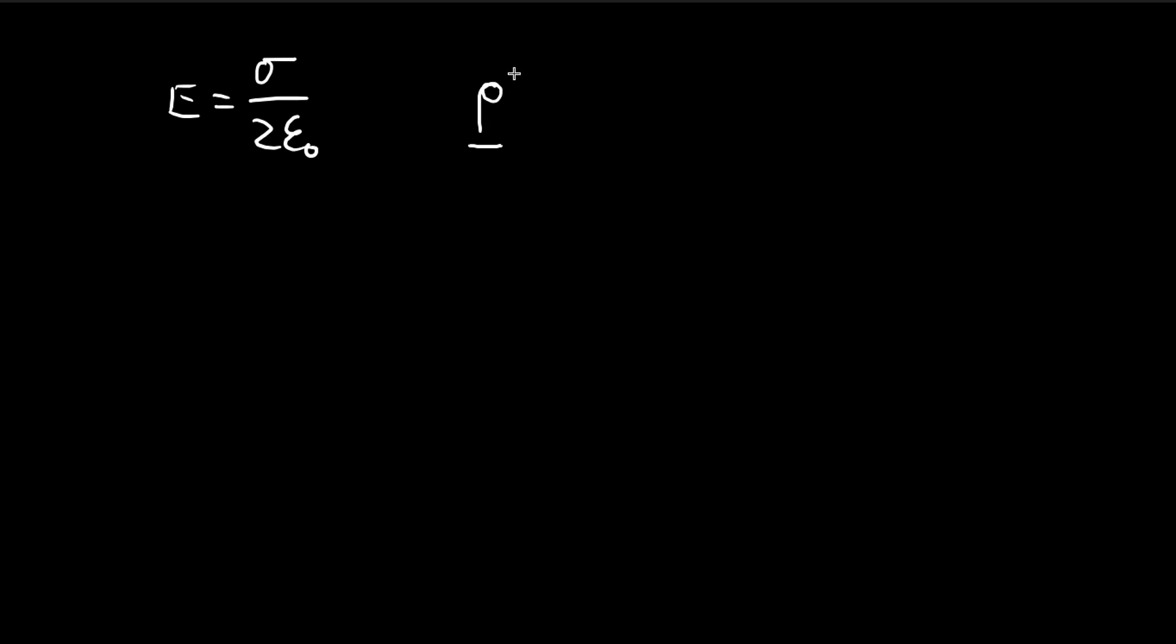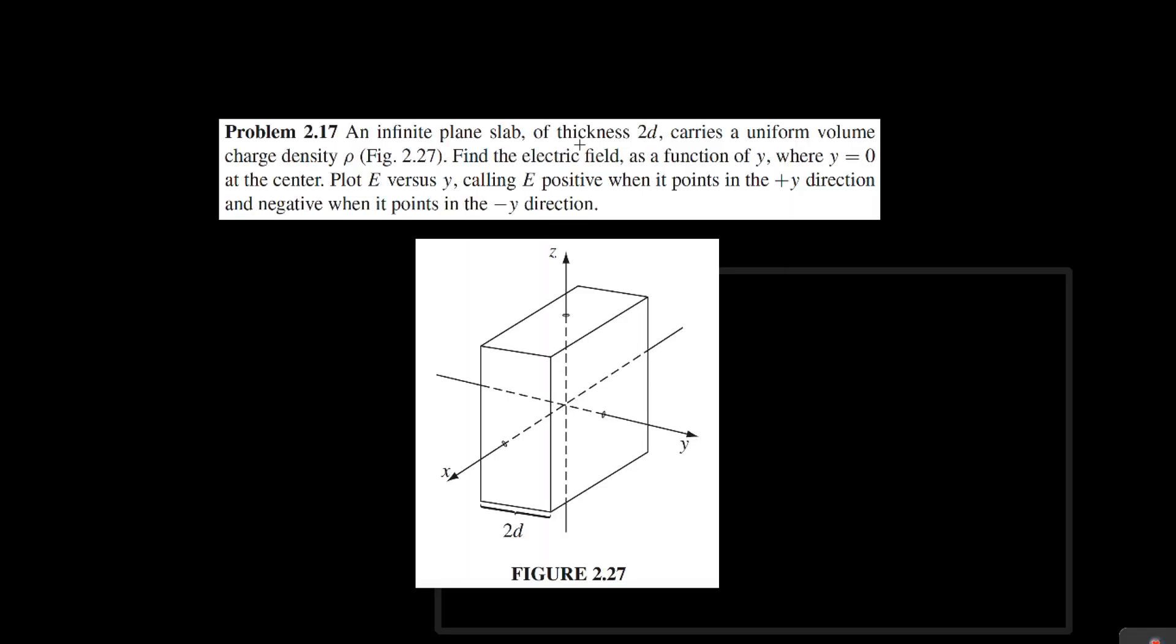So we can easily convert the volume density into the surface density. We do that by multiplying the thickness of the sheet with rho, and that will give us sigma.